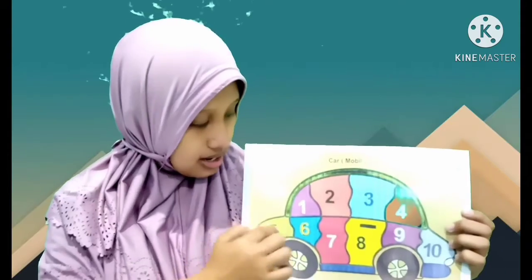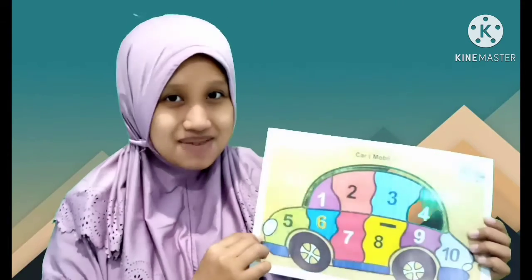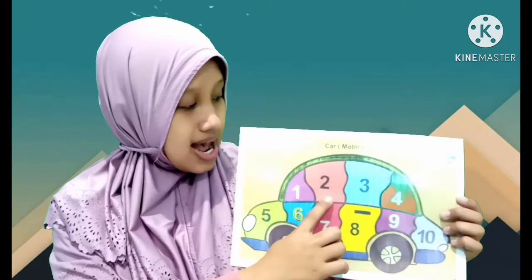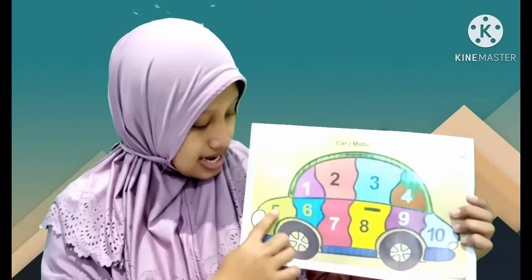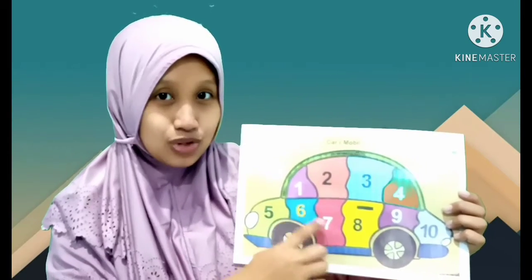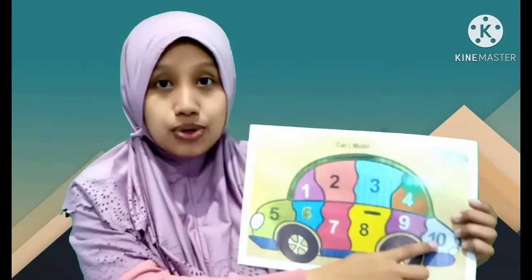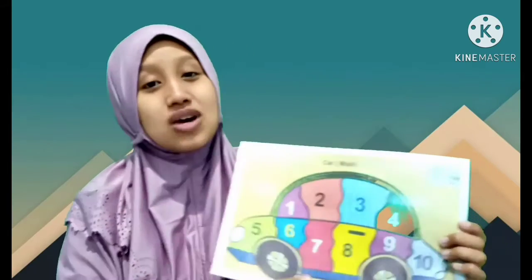Bu Ana juga mau kasih tahu. Ada mobil yang ada angka-angkanya. Coba yuk berhitung dengan Bu Ana. Kita mulai berhitung: satu, dua, tiga, empat, lima, enam, tujuh, delapan, sembilan, sepuluh. Nanti boleh ditiru di rumah. Bu Ana kirim PDF-nya ya.